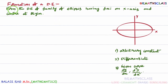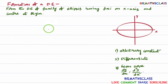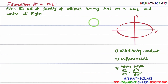You see here — form the differential equation of family of ellipses having foci on x-axis and center at origin. Generally, to form a differential equation, they'll give the equation of the curve, but they have not given the equation of the curve here. First, by observing this statement, we need to write the equation of the curve.